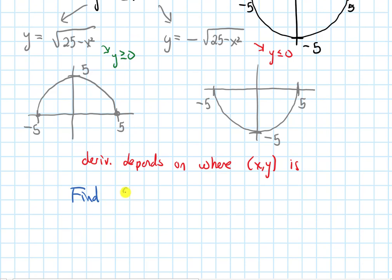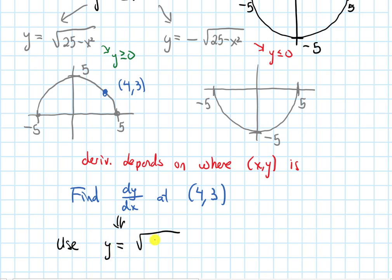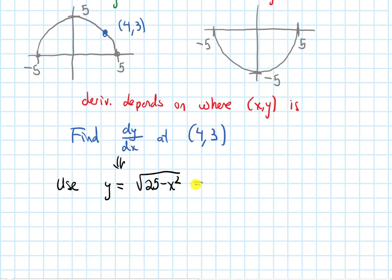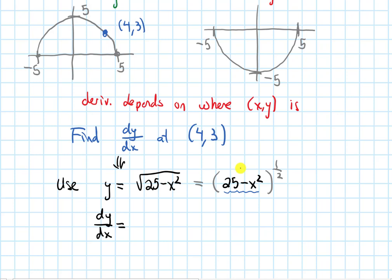What if I want to find dy/dx at the point (4, 3)? This has a positive y-coordinate, so it would be on the top half of the circle. Because of that, we use y equals the square root of 25 minus x squared. We can rewrite this as a one-half power: (25 minus x squared) to the one-half. For this derivative, we need to use the chain rule, because we have the inside function 25 minus x squared getting plugged into the half-power function.